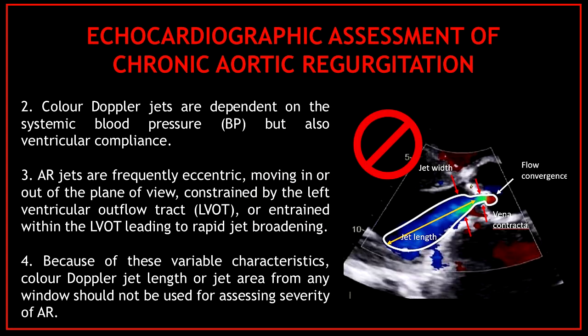The second general concept is that color Doppler jets are dependent on systemic blood pressure but also ventricular compliance. Third, take into consideration that aortic regurgitation jets are frequently eccentric, moving in or out of the plane of view, constrained by the left ventricular outflow tract, or entrained within it, leading to rapid jet broadening. And fourth, because of these variable characteristics, color Doppler jet length or jet area from any window should not be used for assessing severity of aortic regurgitation.